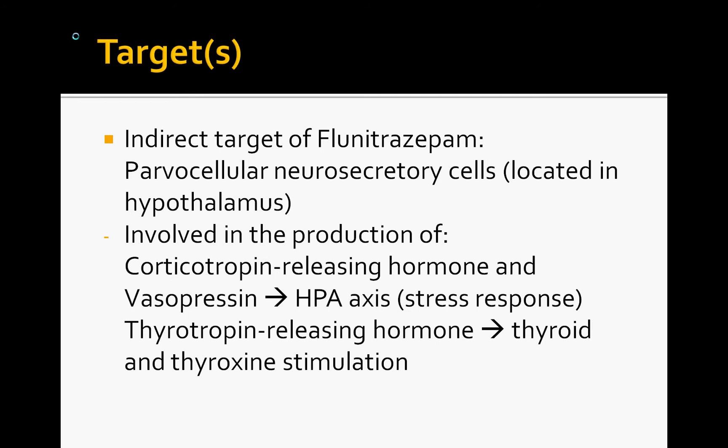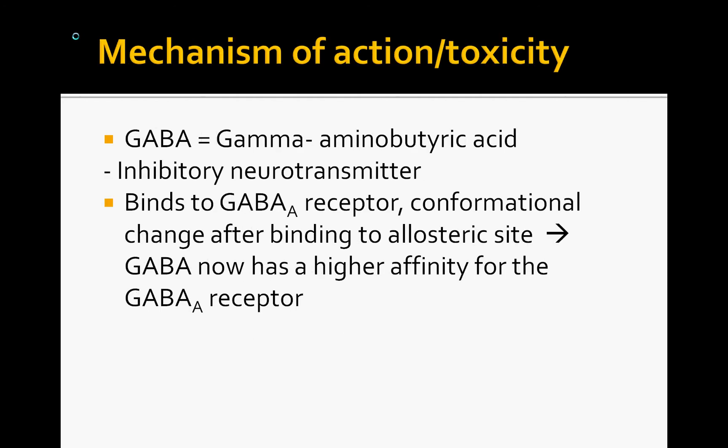The more indirect target of flunitrazepam is the parvocellular neurosecretory cells, located in the paraventricular nucleus of the hypothalamus. This area is involved in the production of corticotropin-releasing hormone and vasopressin, both involved in the HPA axis — a major component of our stress response. When flunitrazepam binds to the GABA-A receptor, it induces a conformational change at an allosteric site, not the active site. Upon this conformational change, GABA has a higher affinity for the GABA-A receptor, increasing GABA's inhibitory action in the central nervous system.